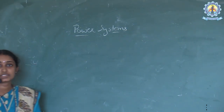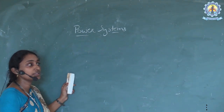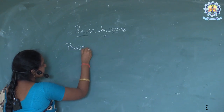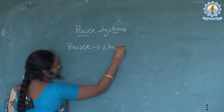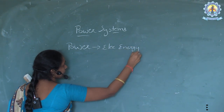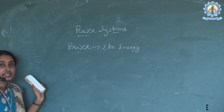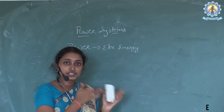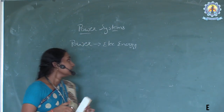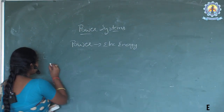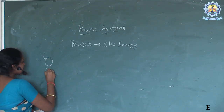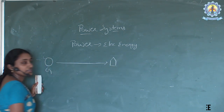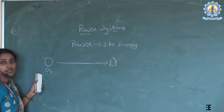Power systems — the name itself indicates the systems which are dealing with power. Power in the sense electrical energy. As electrical engineers, we have to know about how the power is transferred from power stations to our house. Suppose if a generating station is here and our house is here, there are different stages involved in power systems.